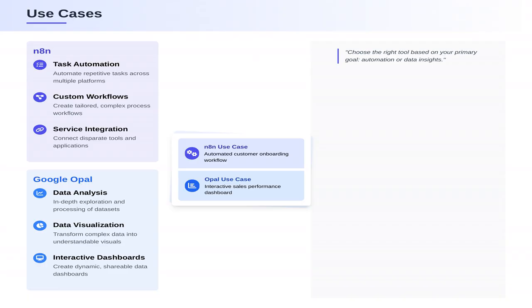Now let's talk use cases. N8N is ideal for automating tasks, creating custom workflows, and connecting disparate services. Google Opal is perfect for data analysis, visualization, and creating interactive dashboards.